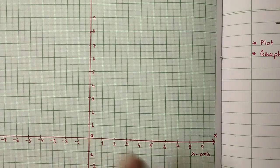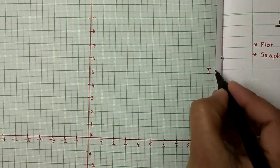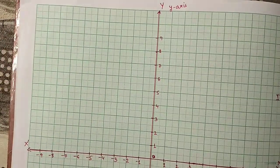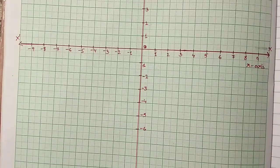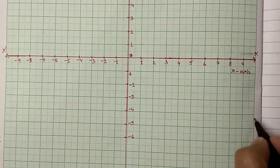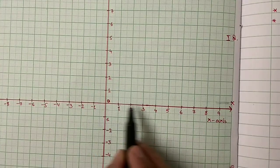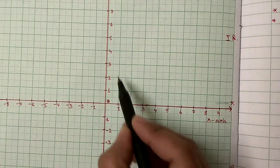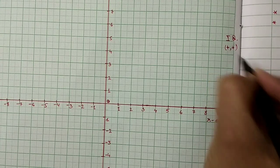These two lines will divide the plane into four parts. This is the first quadrant. In the first quadrant, the x-axis integers are positive and the y-axis is also positive. So the sign of the coordinates in the first quadrant will be plus and plus.